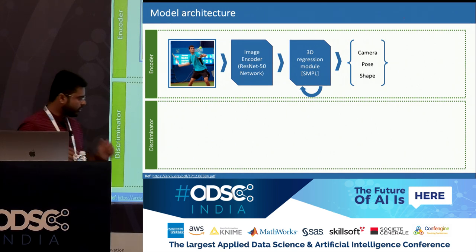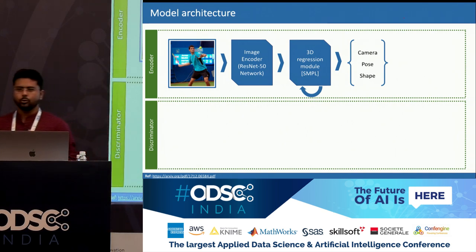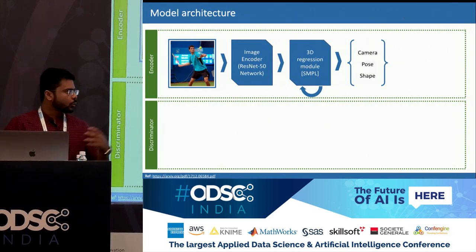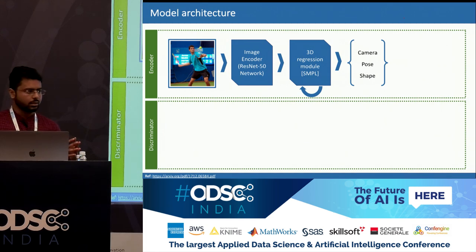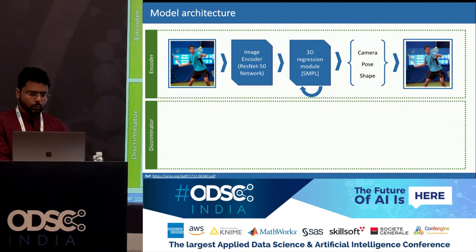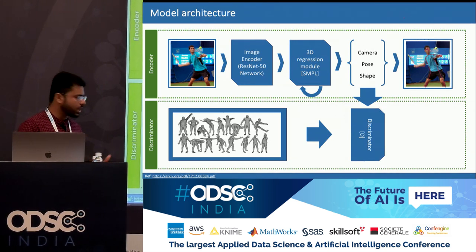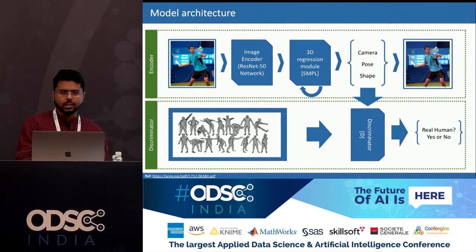The difficult part is that some parameters predicted by the encoder don't look like a human being — for example, a human being cannot have a 360-degree rotation of the head. Some predicted parameters, when rendered, look like the head is flipped to the other side. Given this kind of predicted values to the discriminator, it should reject these and say it doesn't look like a human being. The discriminator is a binary classifier trained on poses from different people, given a parametric test of whether it looks like a human being or not.